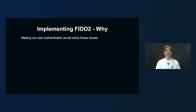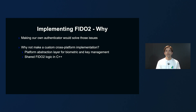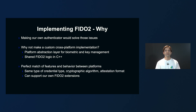The only way to solve those issues is to basically make our own FIDO2 platform authenticator, and this is what we did. Since we have to support both Android and iOS, we decided to share as much code as possible between those platforms. We first built an abstraction layer over each platform's specific biometric and key management APIs. Then, on top of that platform abstraction layer, we implemented the FIDO2 logic in C++, so that we could share it between Android and iOS. Since the FIDO2 logic is shared, there is a perfect match between our Android and iOS authenticator in terms of features and behavior — they both support the same type of credentials, the same cryptographic algorithms, the same attestation format, and we can easily implement our own FIDO2 protocol extensions on both platforms.